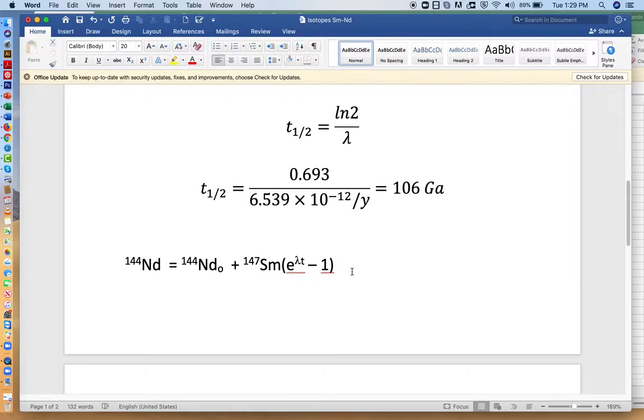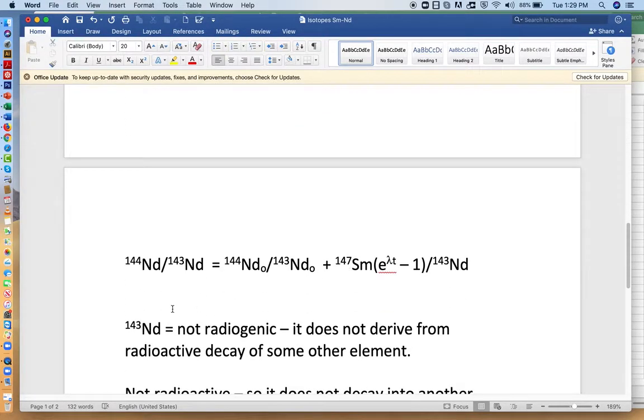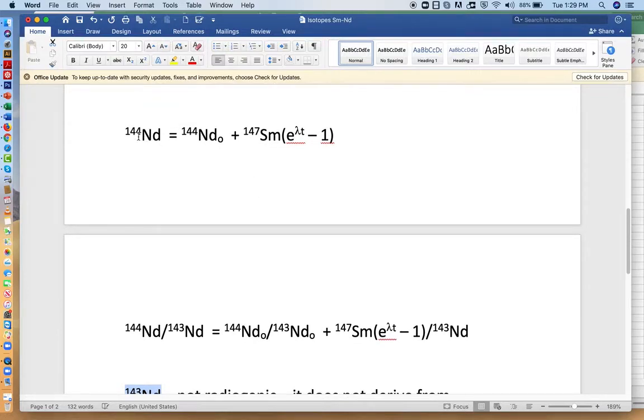Now, it's a little bit easier to measure ratios rather than absolute values. So we're going to look at neodymium 143 as a normalizing factor. We're going to divide everything by neodymium 143 to get this equation here.